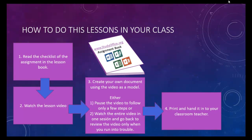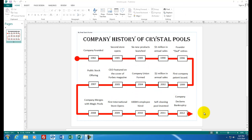Now let's move on to your next assignment. Welcome to assignment number nine: a timeline using Microsoft Publisher. You can see on the screen the final product we're going to create today — it's a company history of Crystal Pools, with about 20 different items on it.